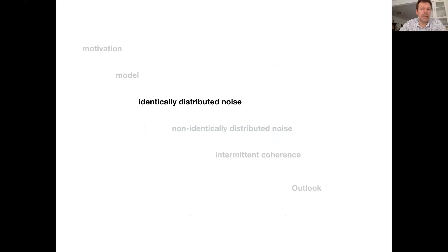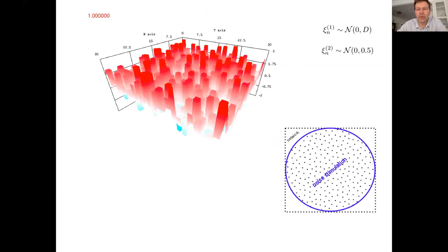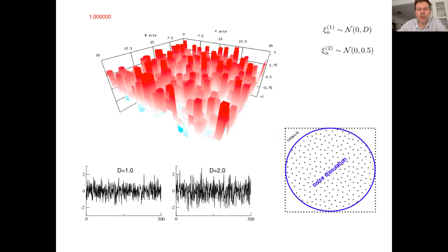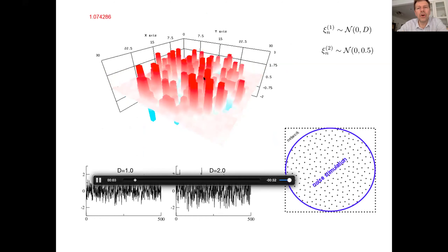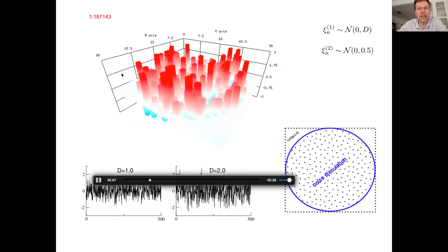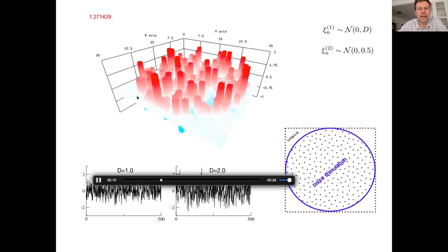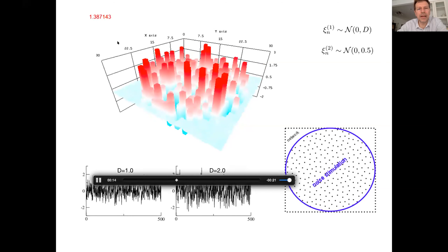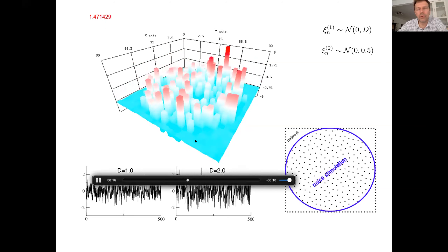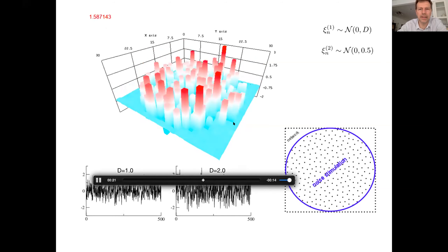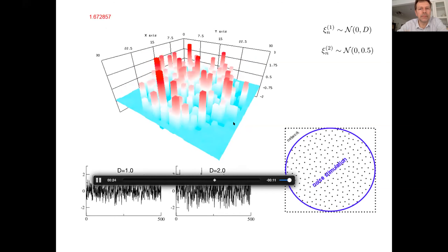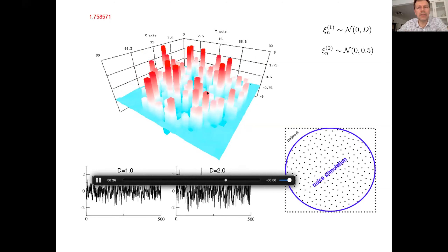Let's start with the identically distributed noise case: noise that is uncorrelated and identically distributed. The setting is a two-dimensional arrangement where I apply stimulation on a circle. In the simulation, the noise is increased with time. You can see fluctuations and a mean value of the field, and after some time at a certain variance, the mean value drops and goes to a lower state.